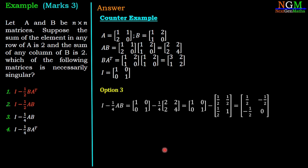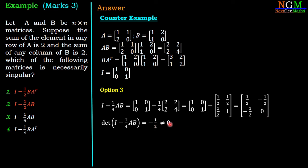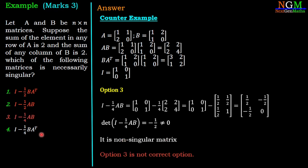Option 3: I minus 1/4 times AB. So [1 0; 0 1] minus 1/4 times [2 2; 2 4] gives [1/2, -1/2; -1/2, 0]. The determinant value is -1/2, which is non-zero. So option 3, I minus 1/4 times AB, is also non-singular and not the correct option.